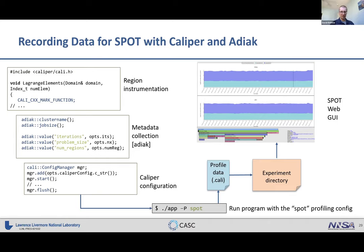We've developed a new library called ADIAC to collect this kind of information. ADIAC collects program-specific metadata and common ones, feeding it into Caliper, which writes it into the Spot datasets. You configure Caliper via the CALI_CONFIG environment variable or the config manager interface, run the program with the Spot configuration, and this produces a .cali output file in an experiment directory that you point the Spot web interface to.